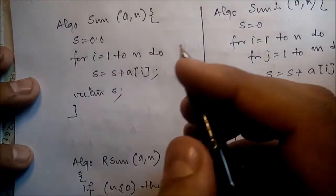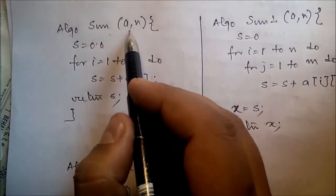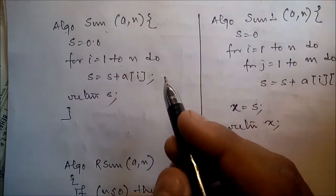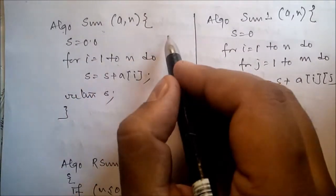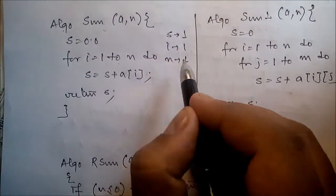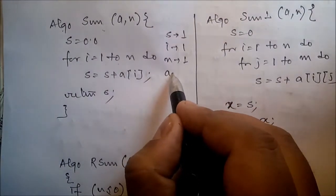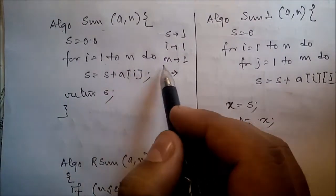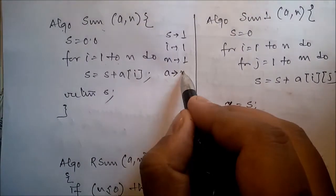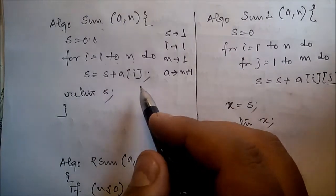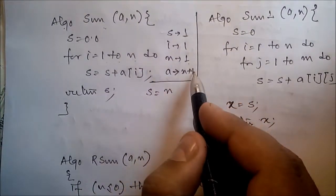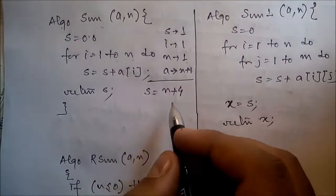Next example. Suppose one program: sum(A, N). Two formal parameters are there. S = 0, for I = 1 to N, S = S + A[I], return S. What is the space complexity? We need one memory space for S, one for I, one for N. What about the memory space required for A? A is an array of size 1 to N. If it starts from 0, it is 0 to N, so the memory space is N+1. Total space complexity is N+1 plus 1 for S, 1 for I, 1 for N — so space complexity is N plus 4.